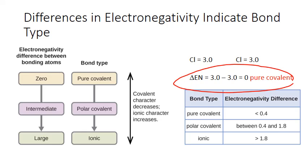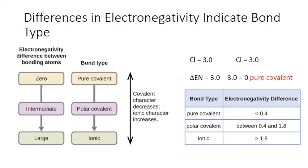A pure covalent bond occurs when the electronegativity difference between two atoms is less than 0.4. The difference between ionic and pure covalent — between transferring electrons and sharing equally — is not necessarily a clear cutoff. Instead, it's much more of a continuum. It turns out that there are certain covalent compounds that can show some degree of ionic character. These are known as polar covalent.